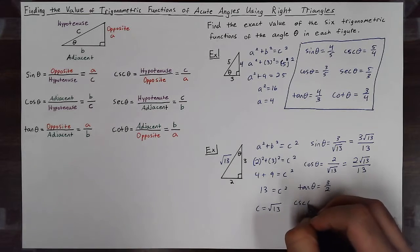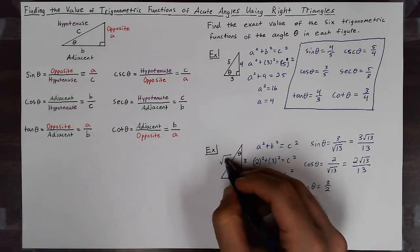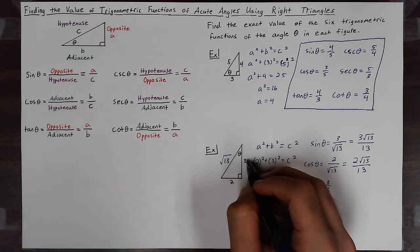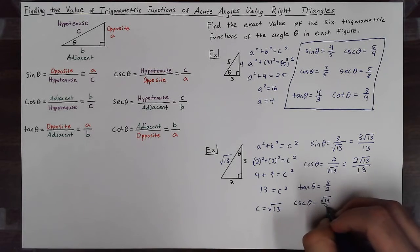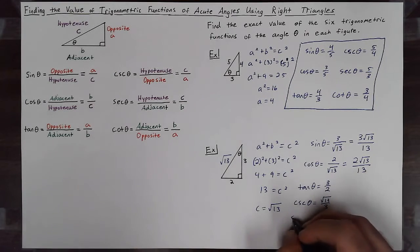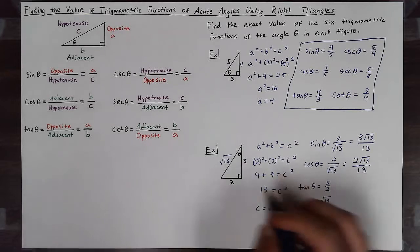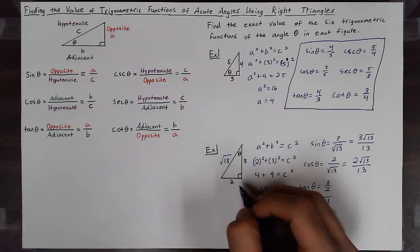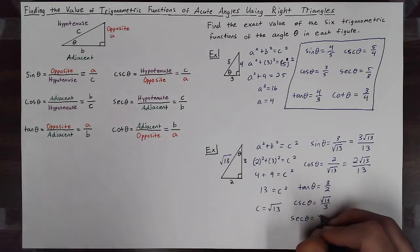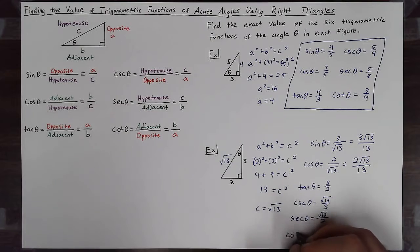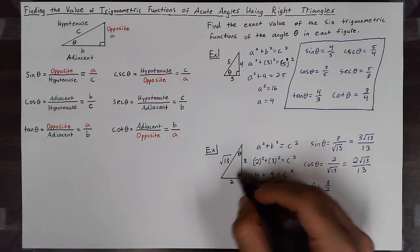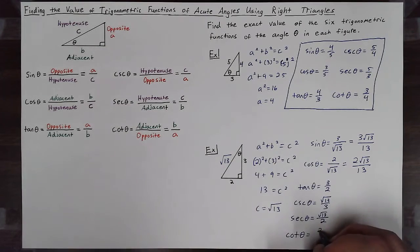Cosecant of theta will be hypotenuse over opposite, so square root of 13 over three. Secant of theta will be hypotenuse over adjacent, so square root of 13 over two. And cotangent of theta will be adjacent over opposite, which is two over three.